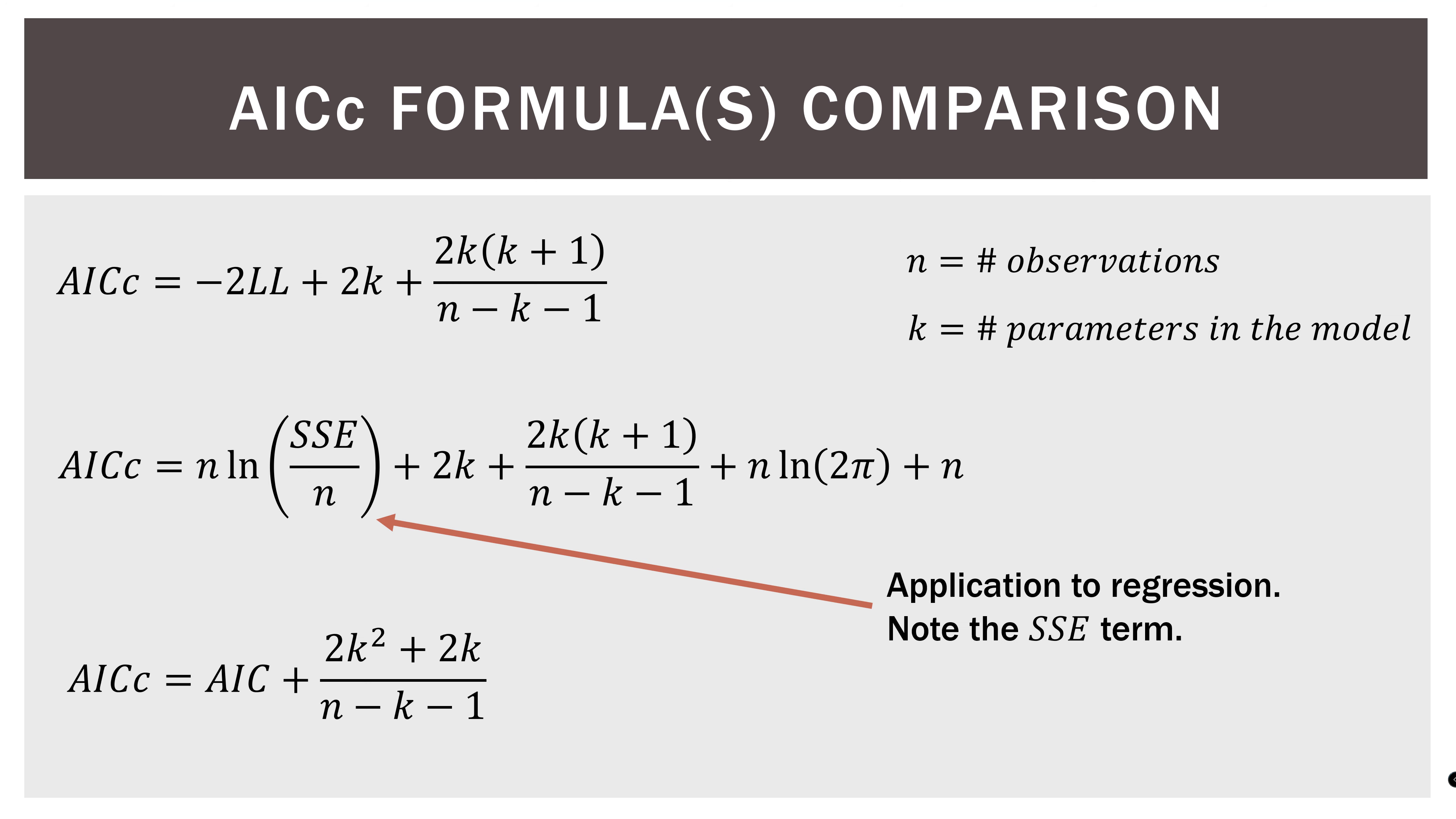You can see that this bottom version takes the AIC and then adds this penalty term for smaller samples, which is what that thing on the right there is, that fraction on the right. In this middle one, you'll see SSE as the sum of squared errors. And of course, if you've done regression, you have seen that quite a lot. So we kind of think of this middle formula as an approximation under the specific instance of regression. So we can use this one because we can find the SSE. We can obviously find N and K. So once we have those three things, we can calculate the AICC. The problem is that actually calculating the log likelihood, the negative two log likelihood up there, is very complex. So what we do in the case of regression is we can use this approximation here in the middle. And we'll see how that works here in a second.